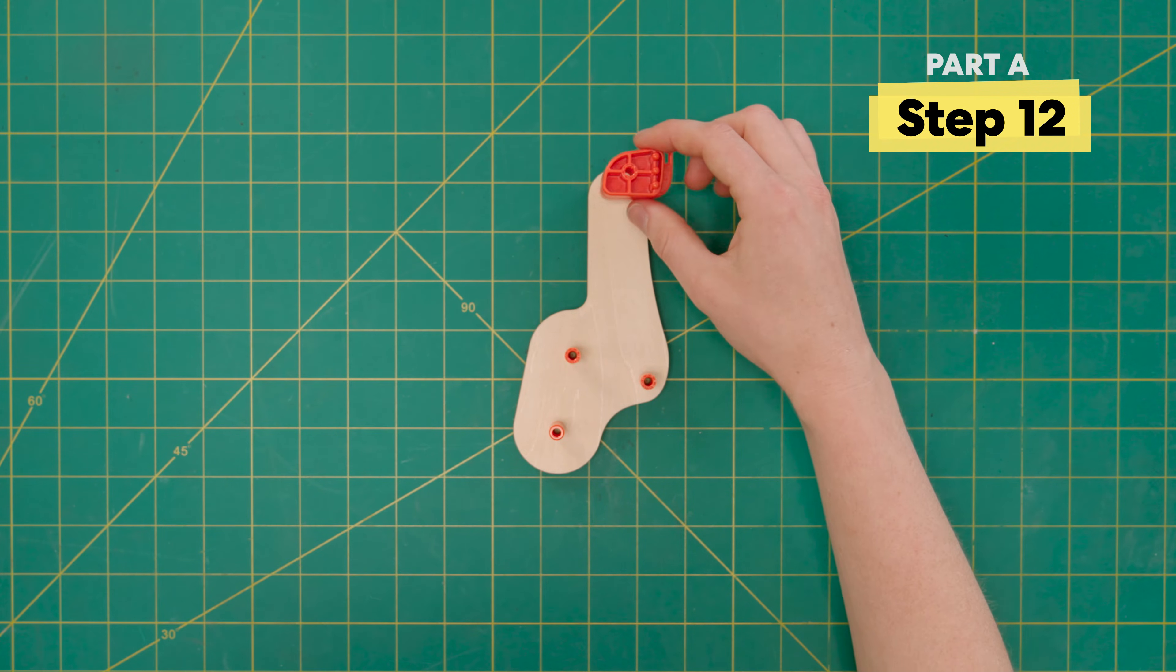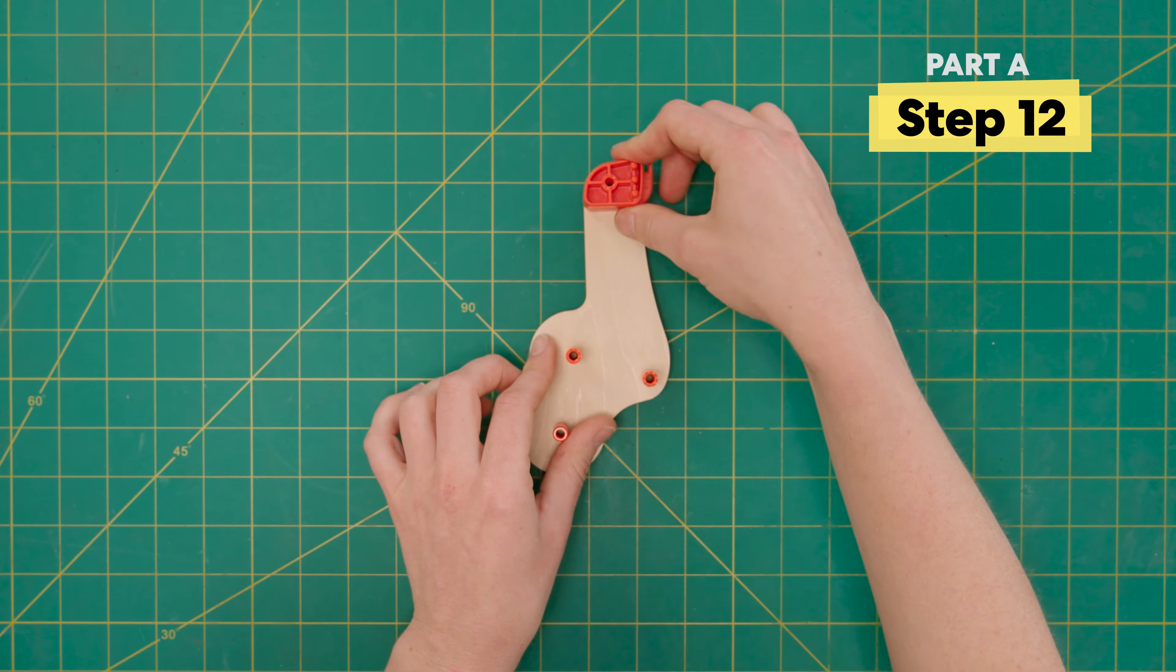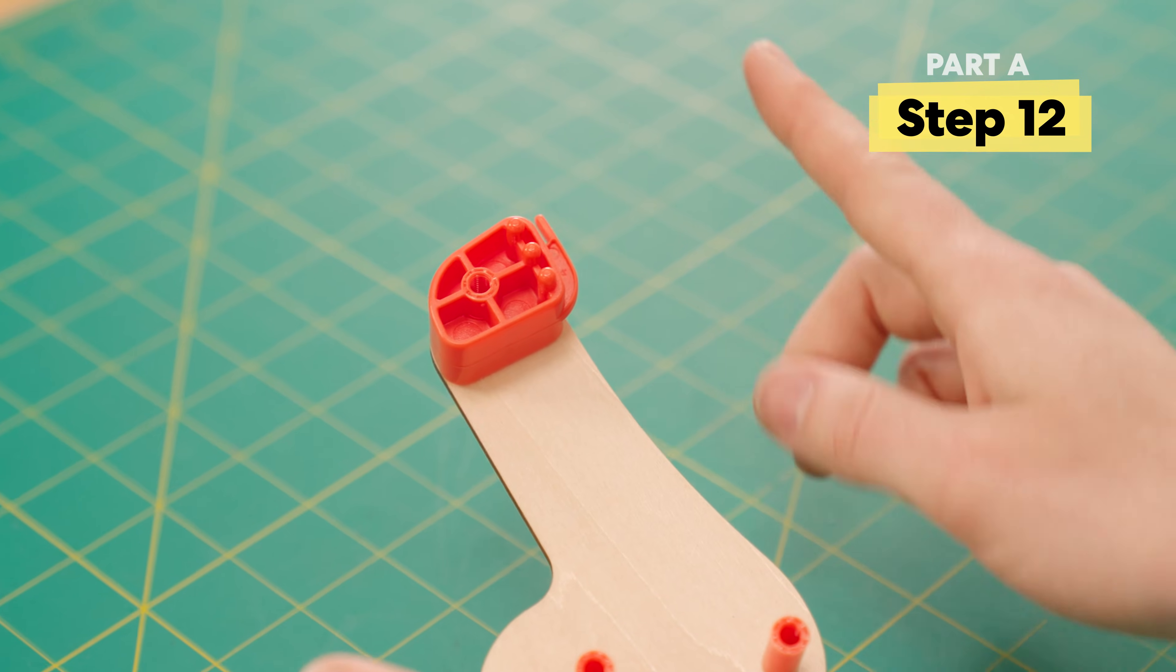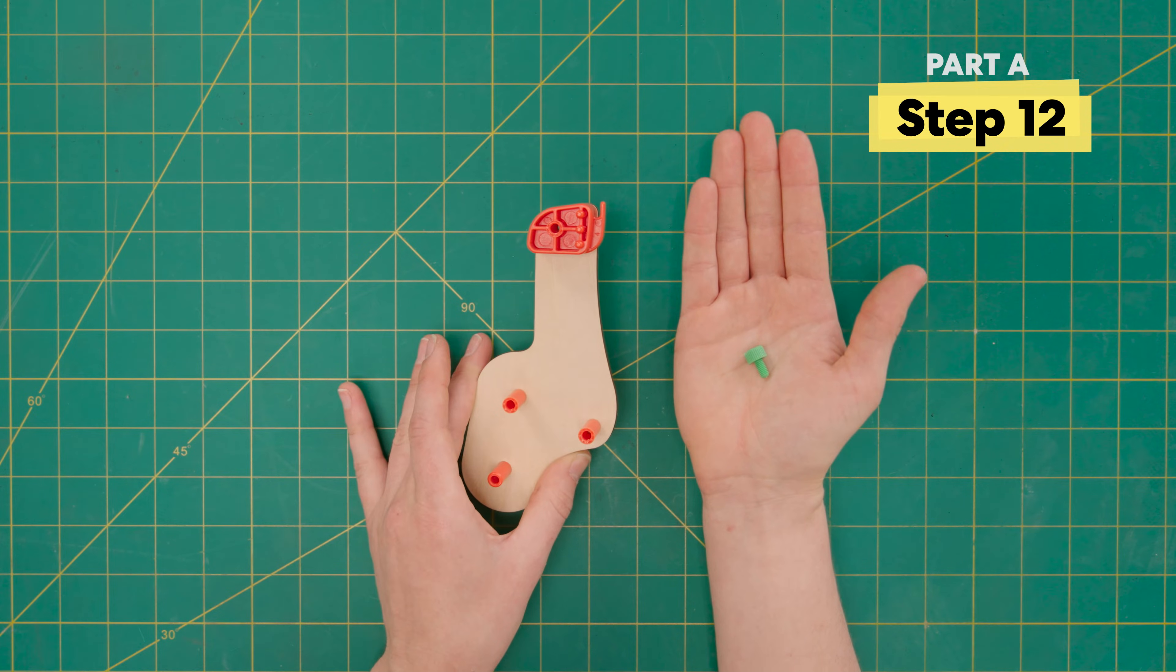Next, we're going to attach another hook and again make sure this top point is facing up. Secure into place with a green bolt.